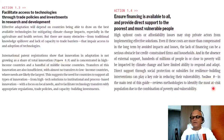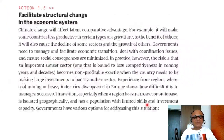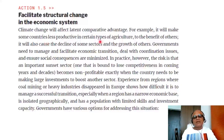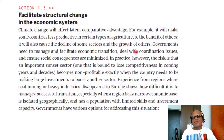Look in Toolbox B later on for reviews of methodologies to identify the most at-risk populations from the combination of poverty and vulnerability — this is true for agriculture as well as health. Action 1.5: facilitate structural change in the economic system. This is part of the adaptation strategy that needs to be built in by principle. Climate change will affect latent comparative advantage — for example, making some countries less productive in certain types of agriculture to the benefit of others — and will cause the decline of some sectors and the growth of others.